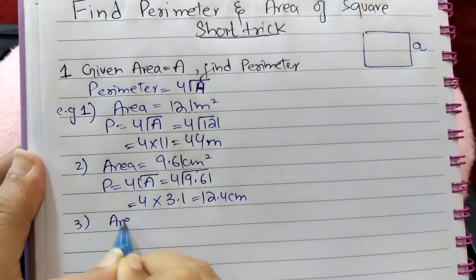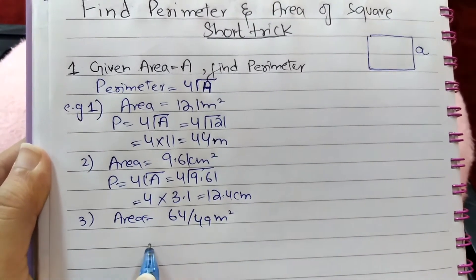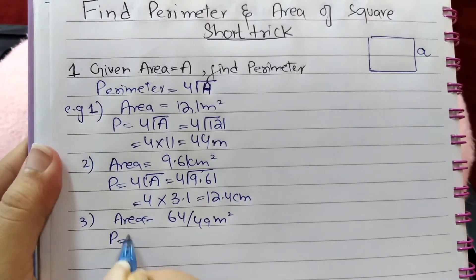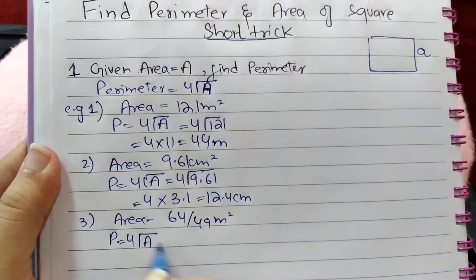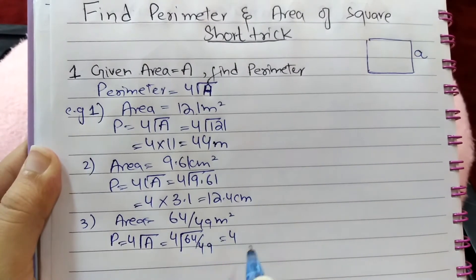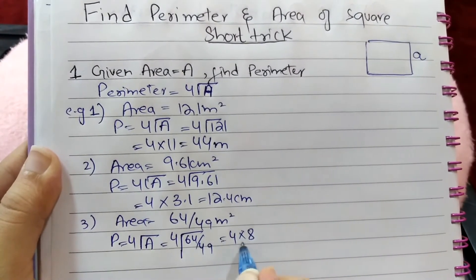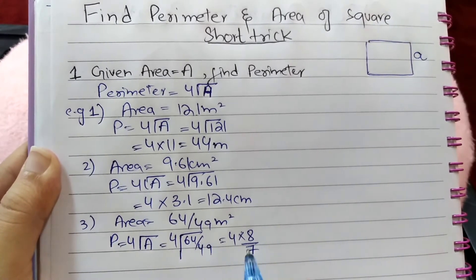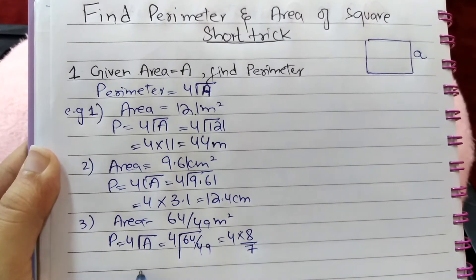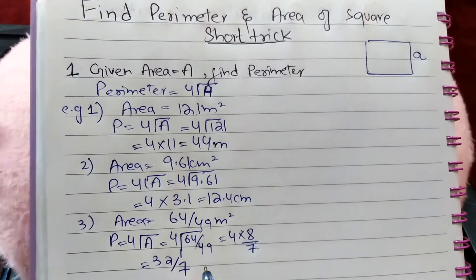Next example: if area is given as 64/49 meter square, find perimeter. Perimeter is equal to four times the square root of 'a', which is equal to four times the square root of 64/49. Since the square root of 64 is 8 and the square root of 49 is 7, so 4 times 8/7 equals 32/7, which is the perimeter of the square having area 64/49 meter square.